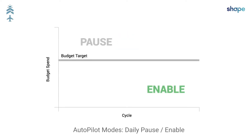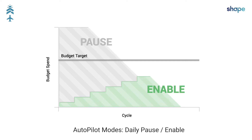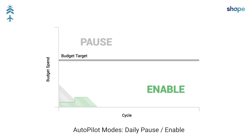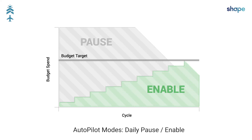The Daily Pause Enable mode uses a moving daily target instead of a fixed cycle target to determine campaign status. Advertising campaigns will be paused if the sum of the spend exceeds the target for that day, and campaigns will be enabled at the start of each day. When a new cycle is entered, daily targets are established and campaigns are enabled to start the day.